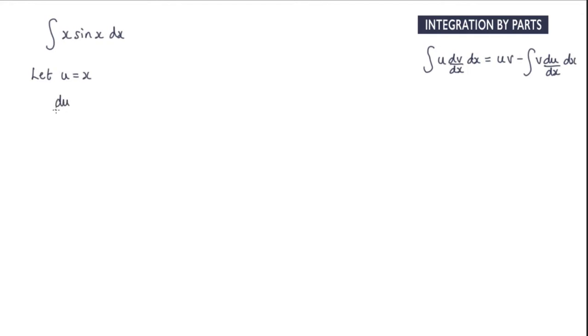So du by dx, well that's equal to 1. And if we let dv by dx, so the second part of the rule, that's equal to sin x and we need to integrate that. The integral of sin x is negative cos x.